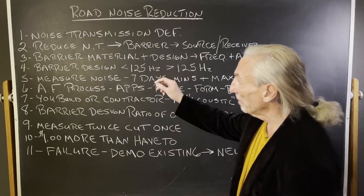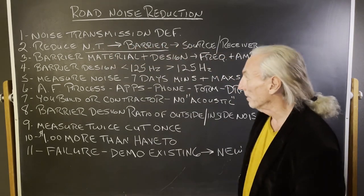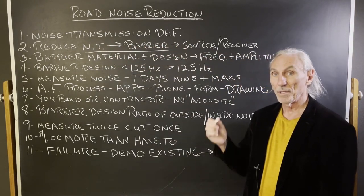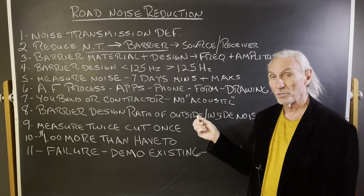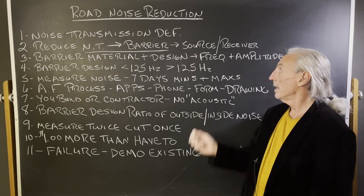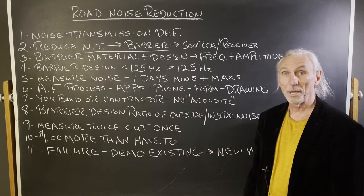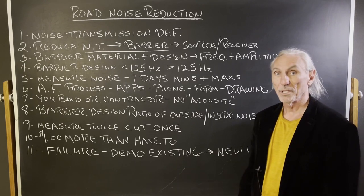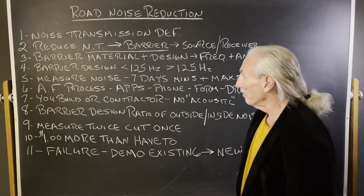How do we reduce noise transmission? We build a barrier — a structure between the source of the noise, using road noise as our example, and the receiver, us. Let's say a bedroom. We're trying to sleep and trucks are going by outside. That's noise transmission.